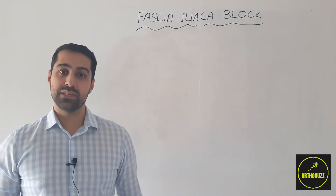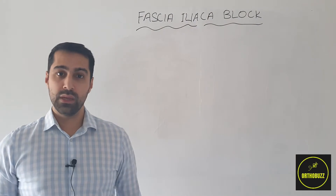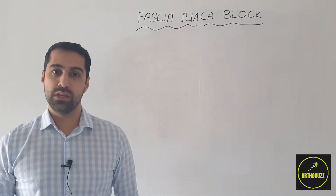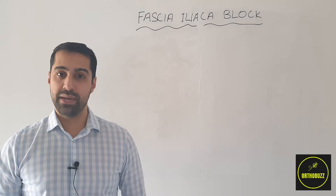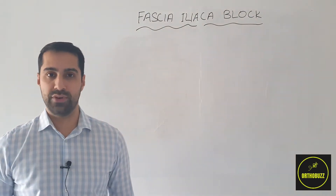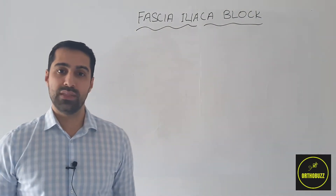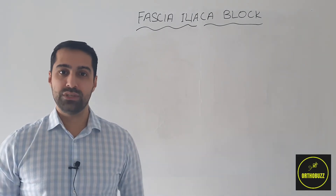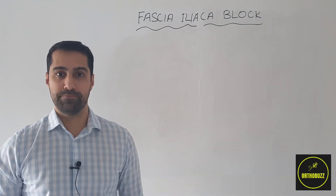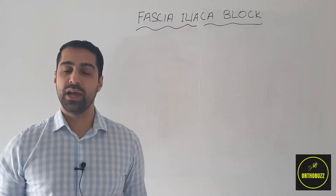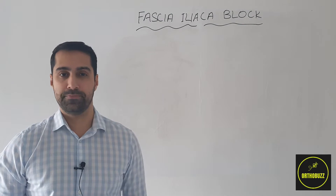Welcome to the next session. Today we're going to be looking at the fascia iliaca block. This is a local anaesthetic injection injected in the groin to provide pain relief to patients presenting to the hospital with hip fractures. It's especially important in this population as it can reduce the overall requirement for systemic opioids. Let's have a look in more detail at what the fascia iliaca block is and then how we'd go about administering it.